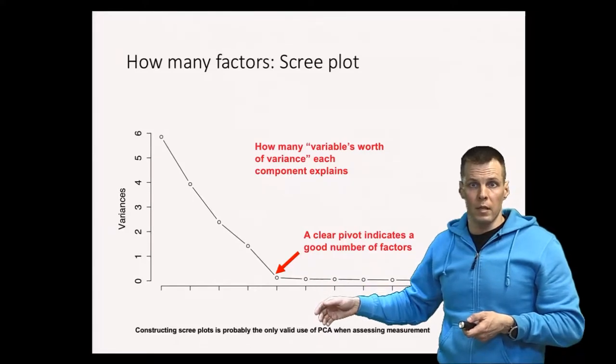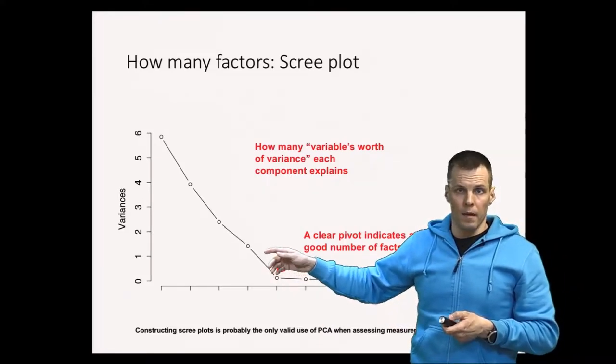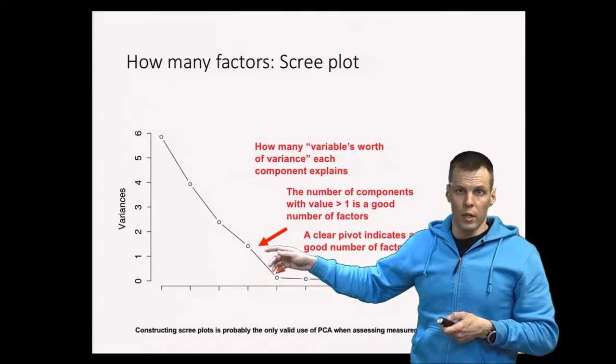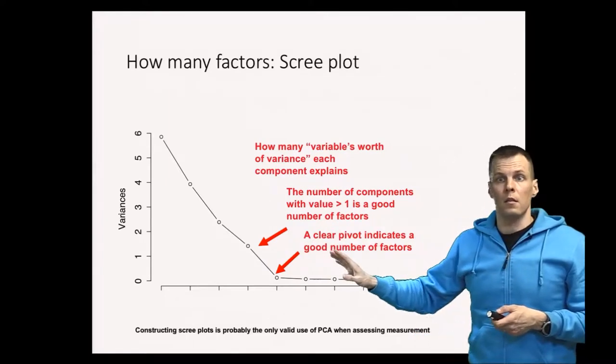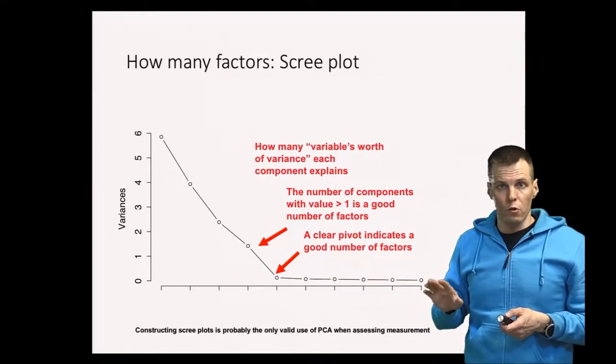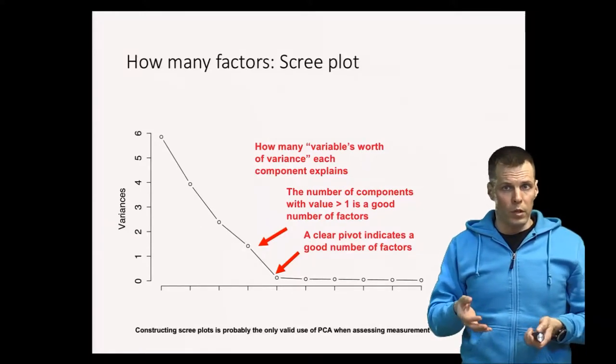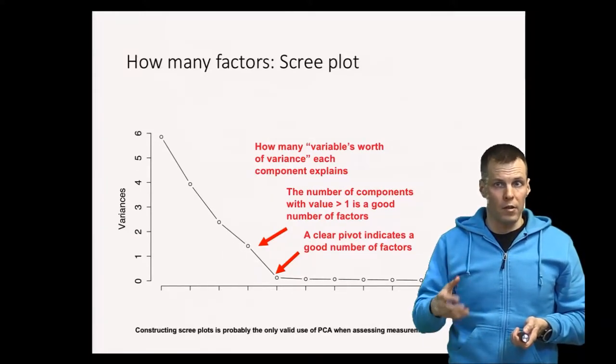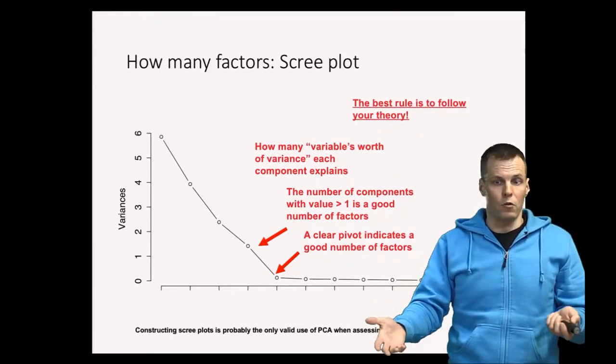Another rule of thumb is that we go as long as we get eigenvalues more than one, which would be four factors. But here we know that this set of indicators is supposed to measure five distinct things, so we can use the best rule of thumb which is our theory. The theory states that we take five factors because that's why we have five different things that we want to measure.